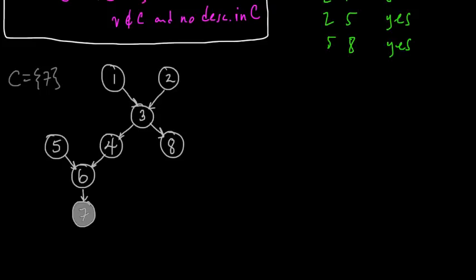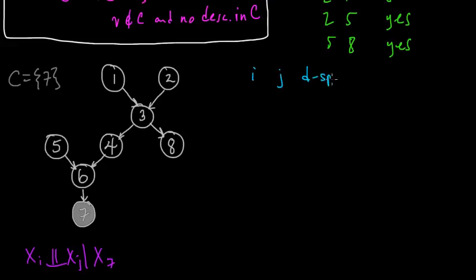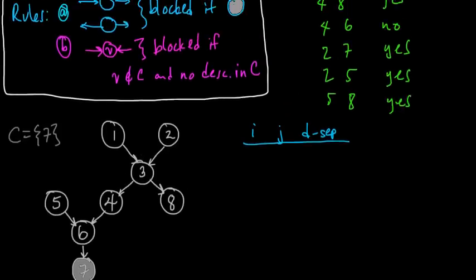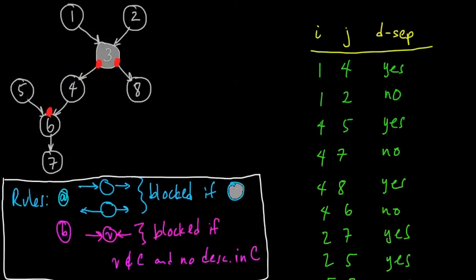Let's write out a similar chart. We're interested in asking: is xi conditionally independent of xj given x7? So we've got i and j, and we want to figure out if they are d-separated. Is anything conditionally independent given 7? Let's use our little rules here.